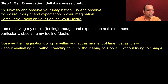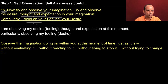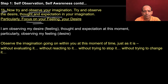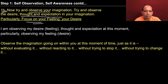In step one, part B, try to observe your imagination — your desire, thought, and expectation — and particularly try to focus on your feeling. With some practice, you may be able to make out your feeling. If you find you are not able to see the feeling, you may also try to find out how you are relating to the particular reality you are thinking about — whether there is a feeling of relationship or opposition.